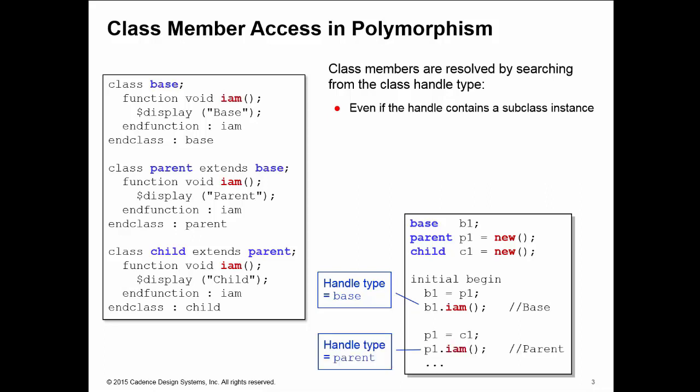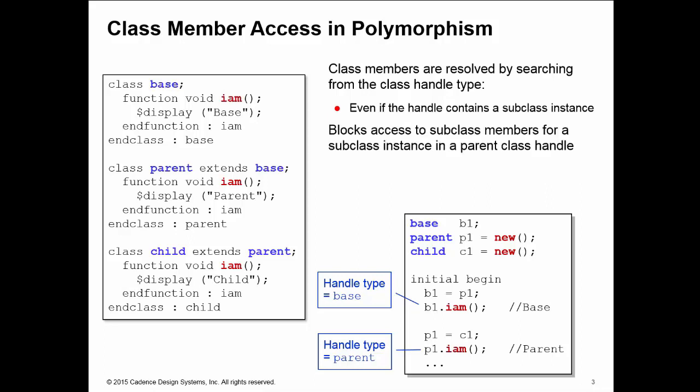This also works for the child class. I take my child class instance and copy it into the parent handle, then call P1.im. This is implemented according to the handle class, so we're executing the implementation in the parent class even though the P1 handle is pointing to a child implementation. This feature means that if you have a subclass instance in a parent class handle, you can't access the members of that subclass. We could fix this by using casting, but there's a much easier solution.